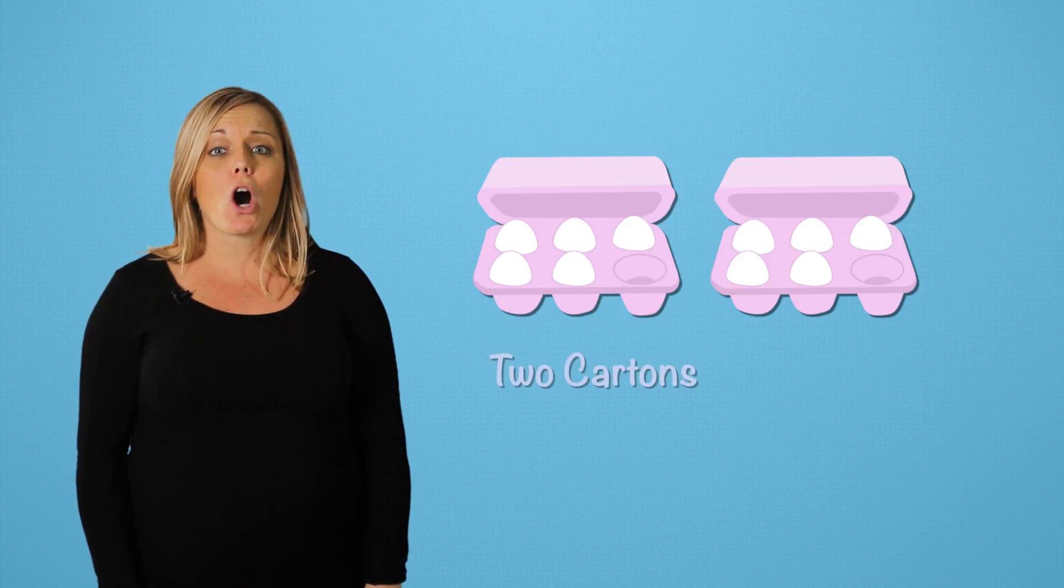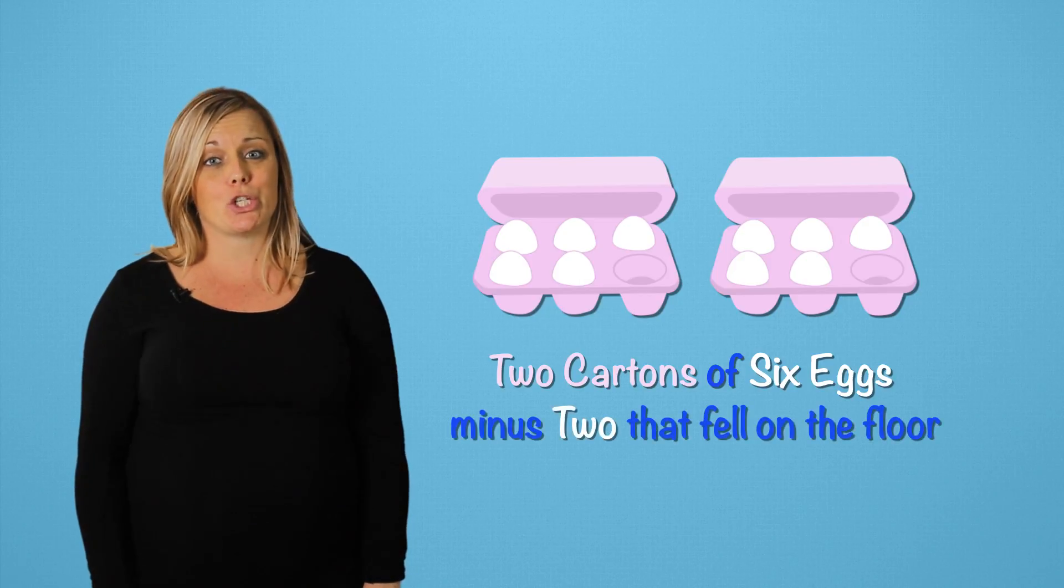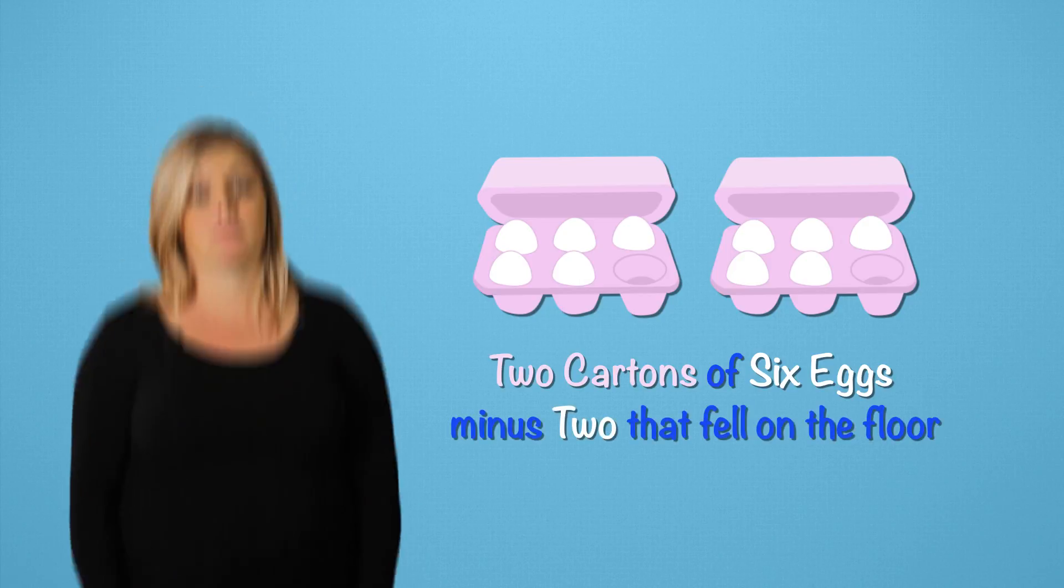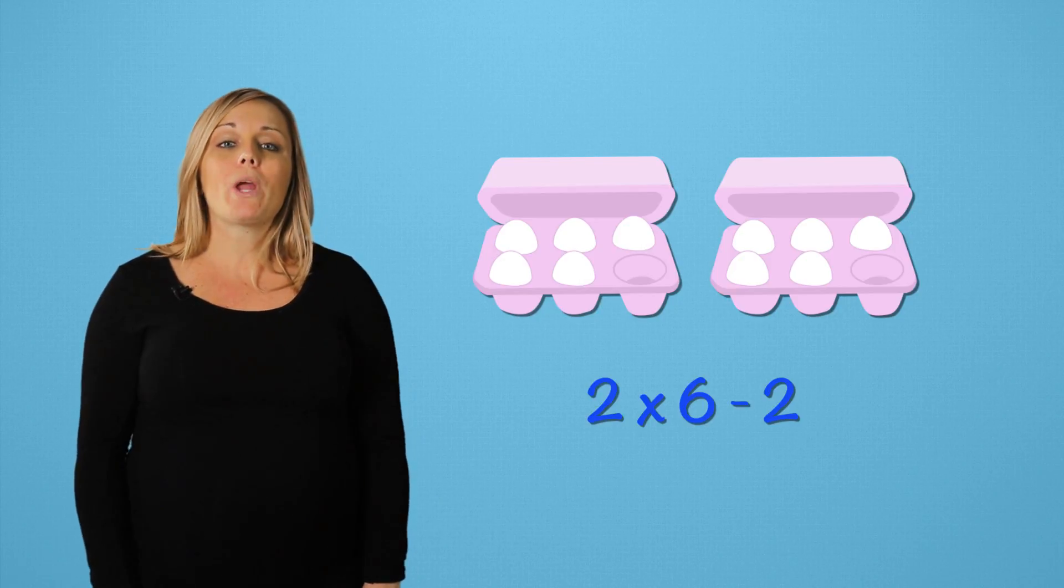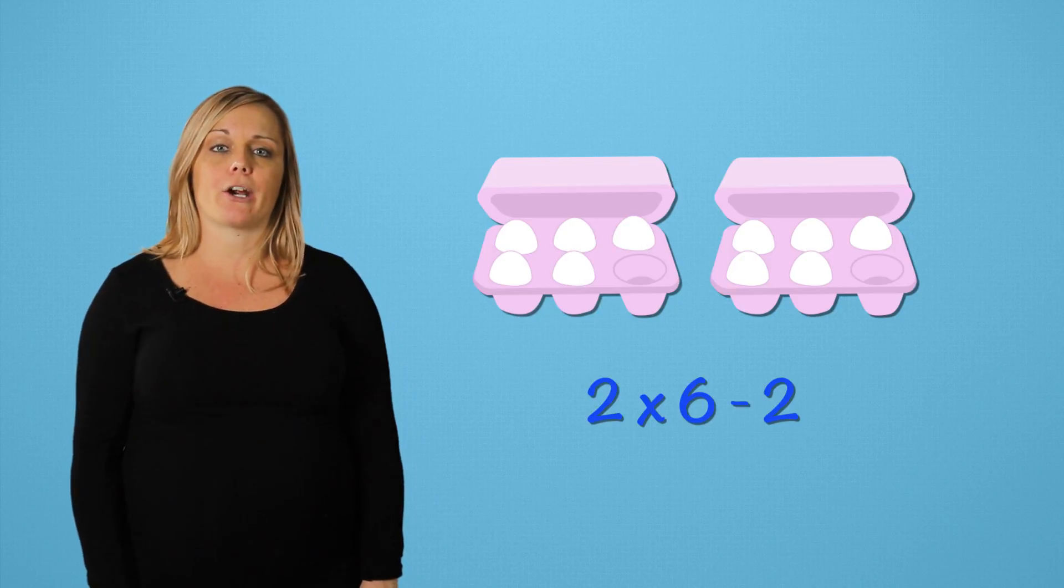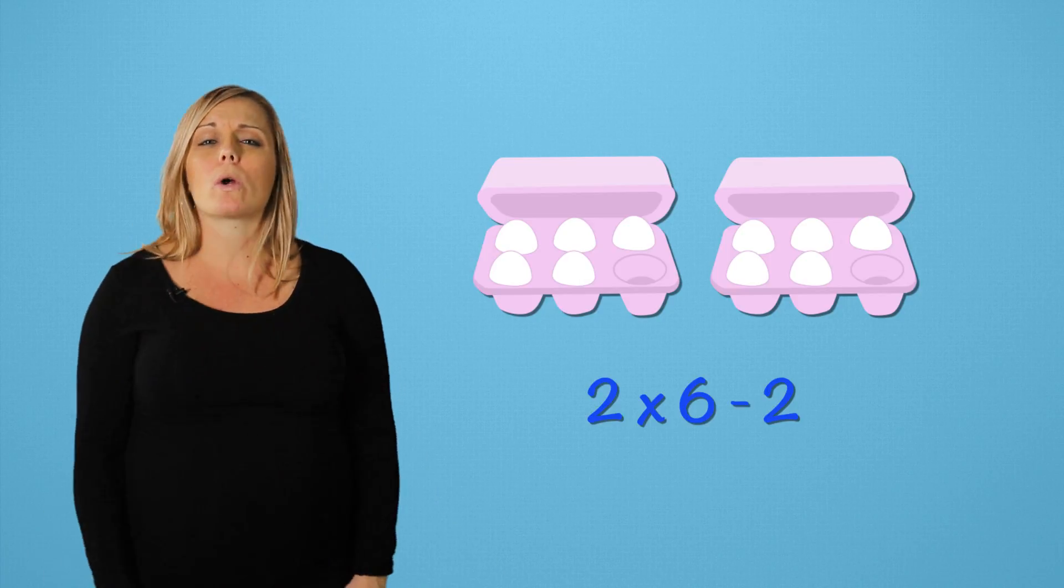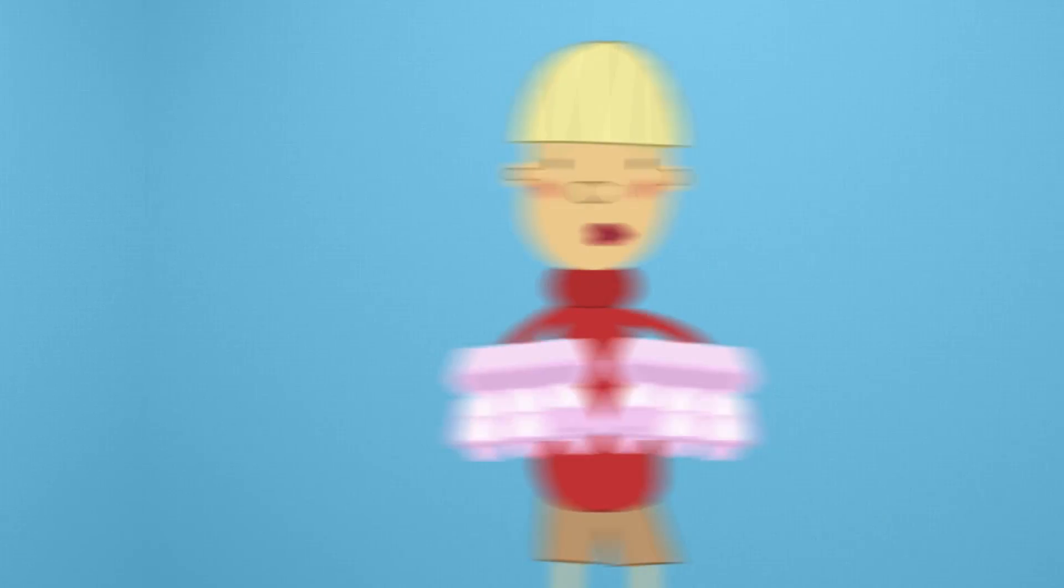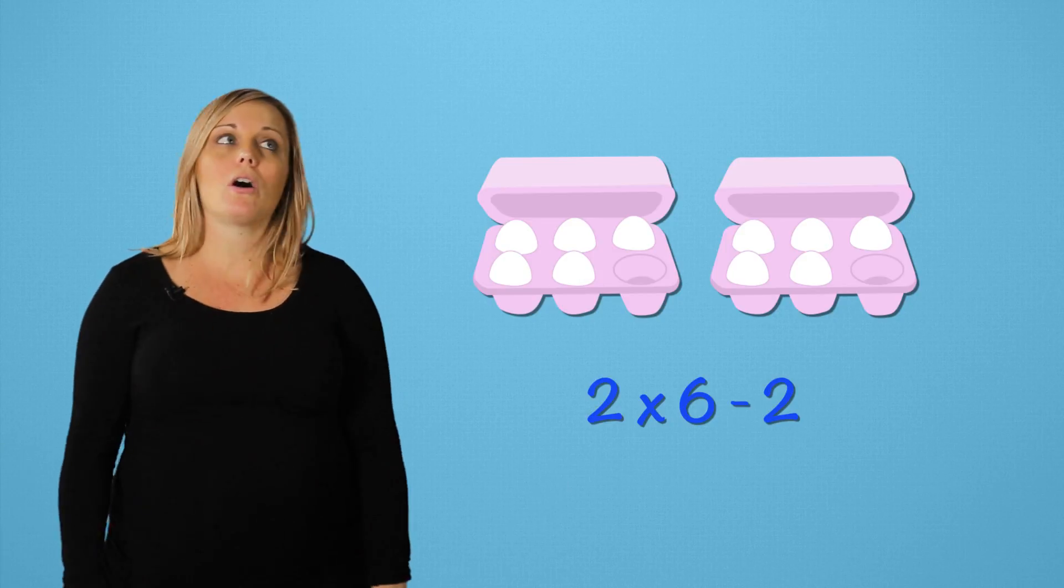Remember, we have two cartons of six eggs minus two that fell on the floor. Exactly. So, Richard, we have our full equation here. If we do it again, does it matter if we multiply first or subtract first? I don't know. Either one is fine. Let's just make the cake, huh? Oh, Richard. Always rushing.